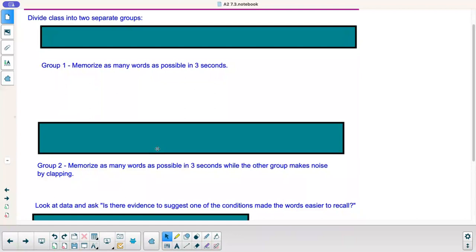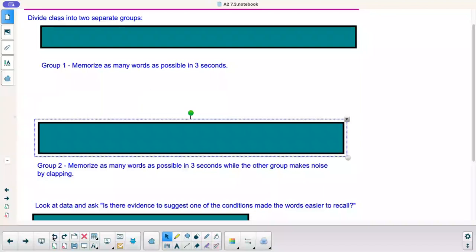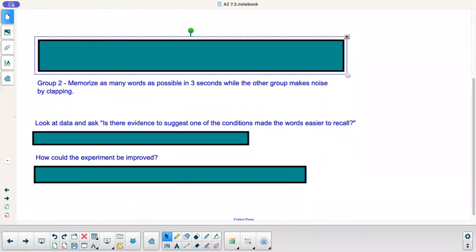Okay, ready, go. Oh, hold on. I lied. Ready, go. All right. So the idea there is, we're trying to see if there's evidence. Right here it says, look at the data and ask, is there evidence to suggest one of the conditions made the words easier to recall?